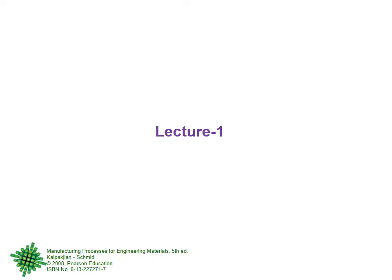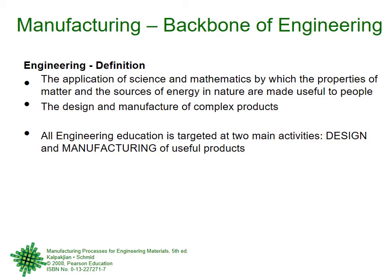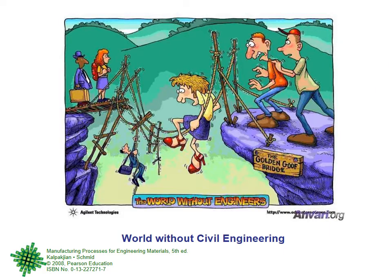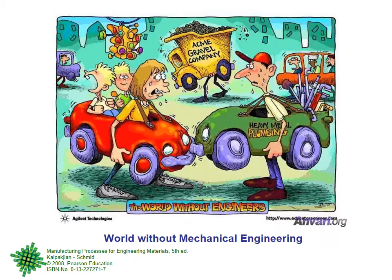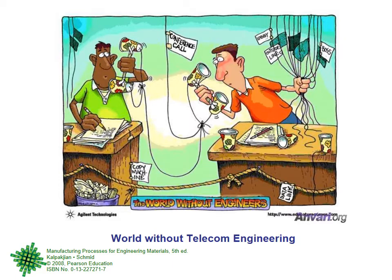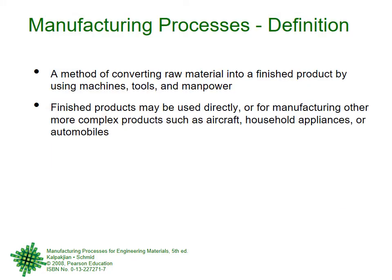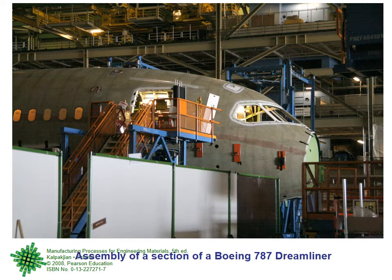Last time we talked about manufacturing being the backbone of engineering, and we tried to define what engineering is. We gave graphical pictures showing that the whole world is actually manufacturing — examples of what the world would be without civil engineering, mechanical engineering, telecommunications engineering, computer engineering, or aerospace engineering. Then we defined manufacturing and manufacturing processes.